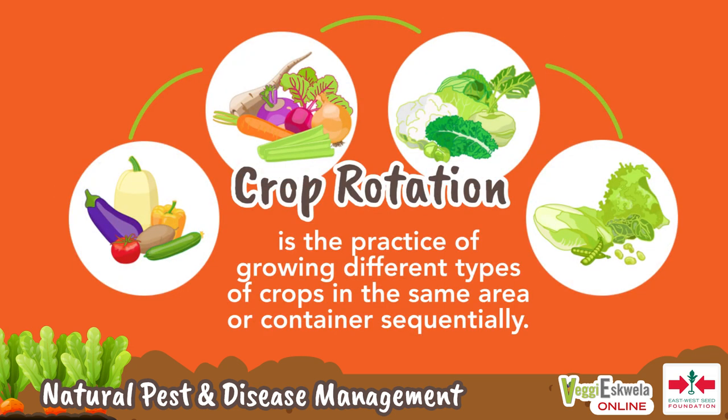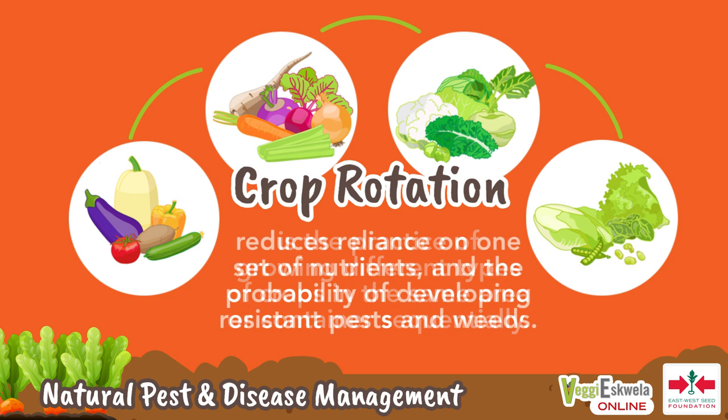Crop rotation is the practice of growing different types of crops in the same area or container sequentially. It reduces reliance on one set of nutrients and the probability of developing resistant pests and weeds. For urban gardeners, we should change the crop planted in the container or bed at the end of the crop cycle to that of a different family.